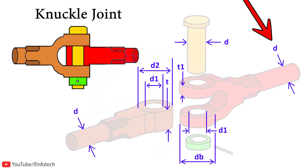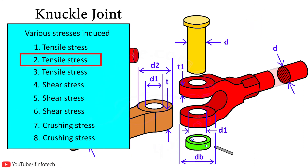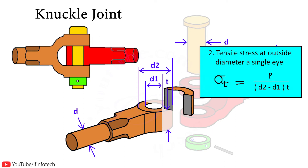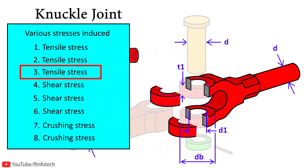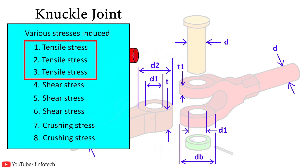The minimum area of a knuckle joint is the diameter of the rod, that is small d. The first failure occurs at minimum area — tensile stress at the rod — equal to load P divided by the cross-sectional area of the rod, that is π/4 × d². The next tensile stress occurs at the outside diameter of the single eye: P divided by (d2 − d1) × t. The third tensile stress is at the outside diameter of the double eye: P divided by 2 × (db − d1) × thickness of double eye.